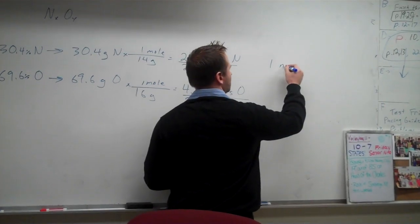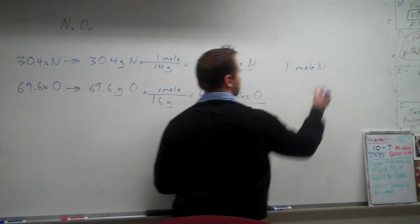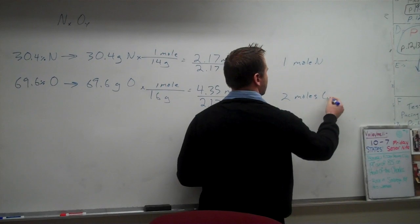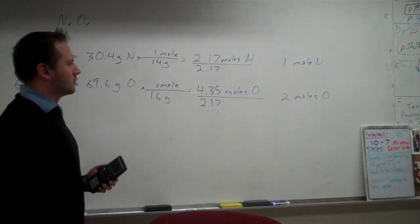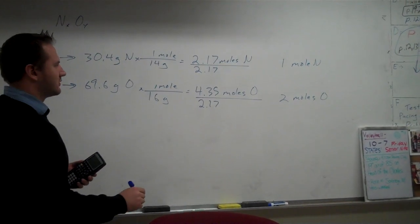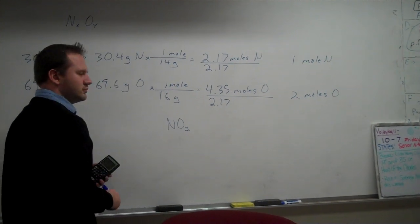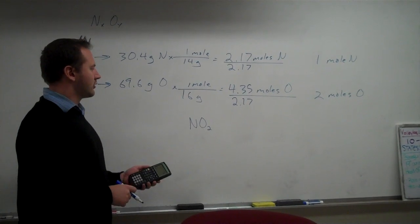So this works out to be, for every one mole of nitrogen, we have two moles of oxygen. So we can say that our empirical formula is going to be NO2. And that would be the empirical formula.